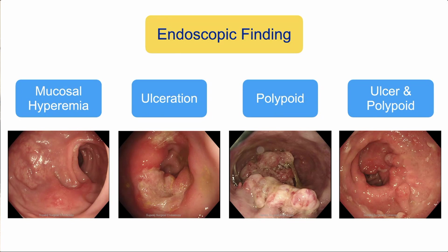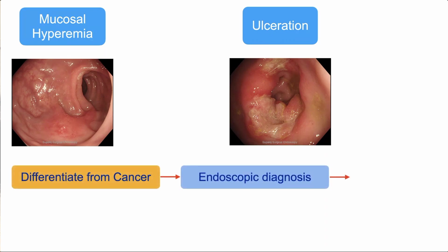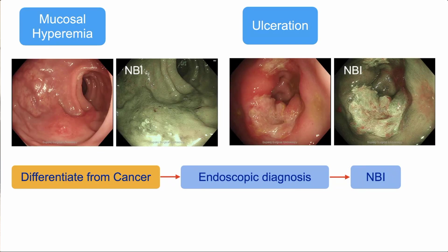Our approach differs depending on the finding. For the two lesions — hyperemia and ulceration — first of all we have to differentiate them from colorectal cancer by endoscopy. We usually use narrowband imaging to diagnose the lesion by colonoscopy. After applying NBI, the mucosal surface looks different from colorectal cancer. The pattern of the vasculature and the surface pattern are different from colorectal cancer — it looks like inflammation, sometimes similar to surrounding mucosa, but distinct from colorectal cancer.